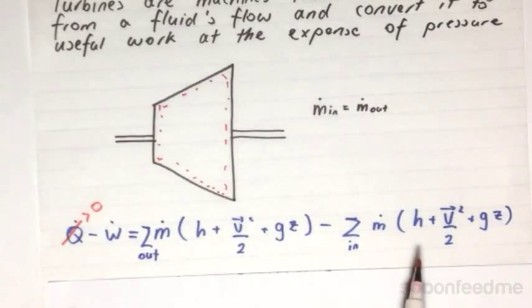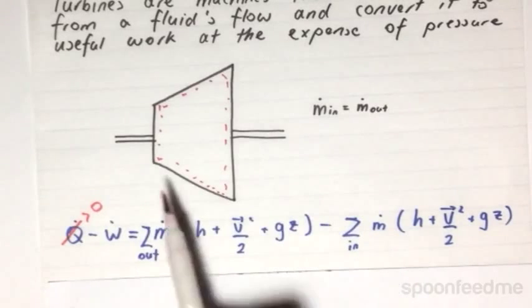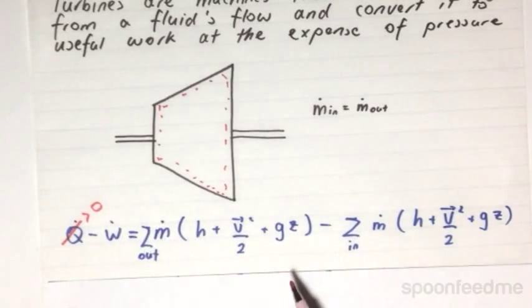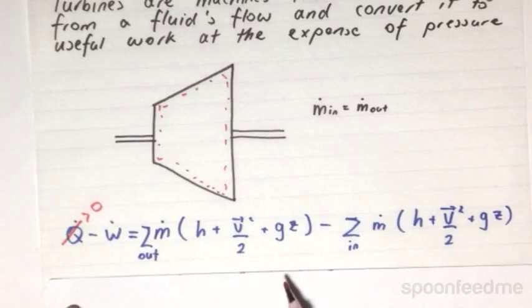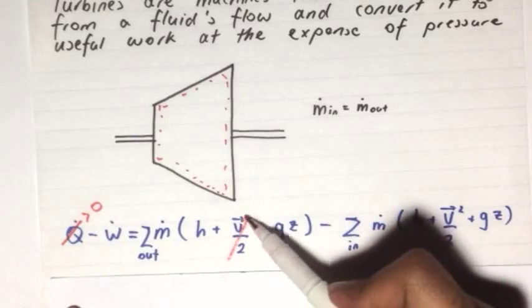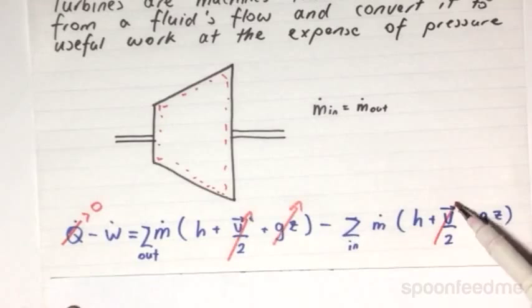Furthermore, when a fluid is passing through a turbine, its velocity will not be changing significantly, and nor will its elevation. So therefore, these kinetic energy and potential energy terms will also be cancelled.